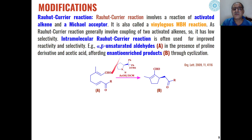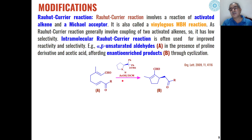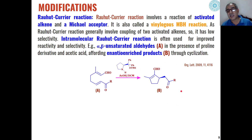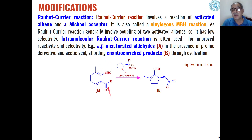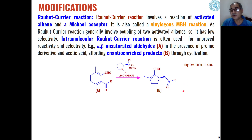For example, when alpha-beta unsaturated aldehydes are reacted in the presence of proline as catalyst using acetic acid as solvent, we get isomeric MBH products through cyclization. The aldehyde acts as the carbonyl compound, and the alkene parts undergo cyclization to give enantio-enriched products.